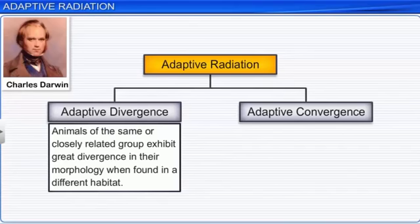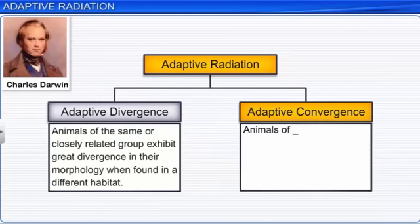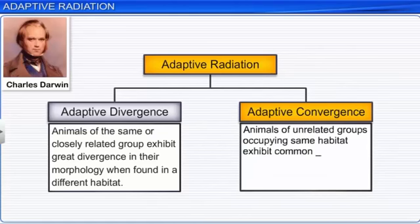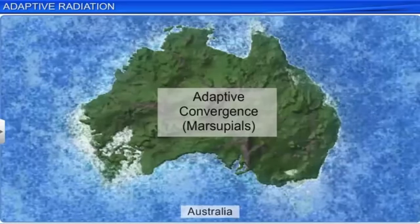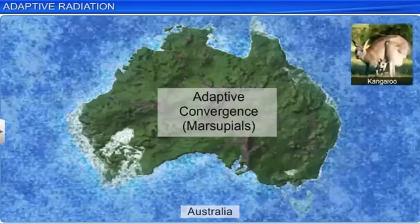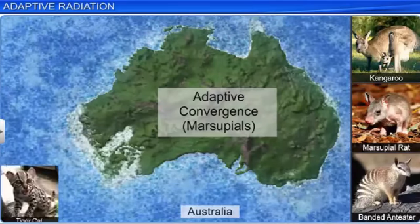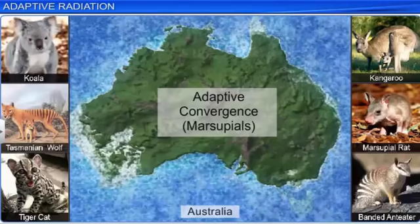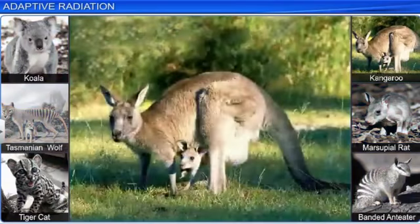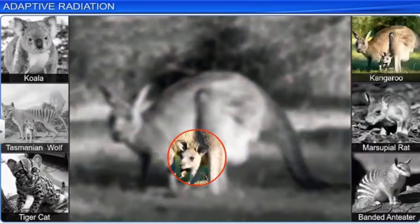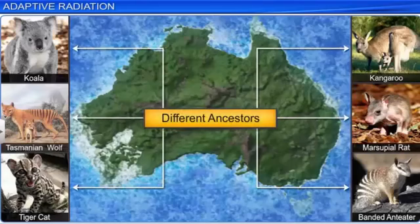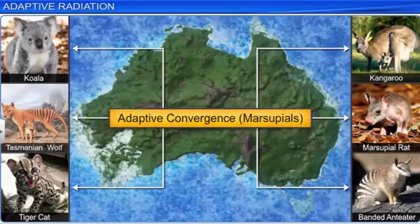Another type of adaptive radiation is adaptive convergence, where animals of unrelated groups occupying the same habitat exhibit common features. For example, Australian marsupials such as the kangaroo, marsupial rat, banded anteater, tiger cat, Tasmanian wolf, and koala. Marsupial mammals are characterized by their pouch, in which the female carries the young through the initial days of infancy. Many different types of marsupials, with different ancestry, have evolved on the continent of Australia. This type of evolution, where several adaptive radiations have occurred in an isolated geographical area with several habitats, is known as convergent evolution.